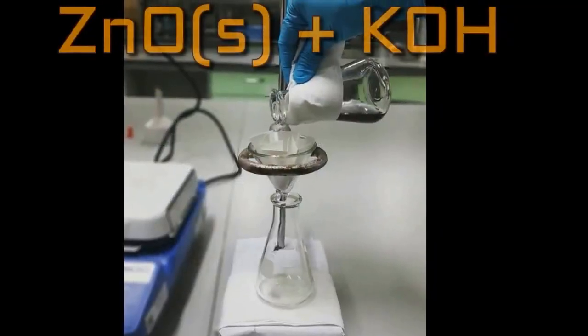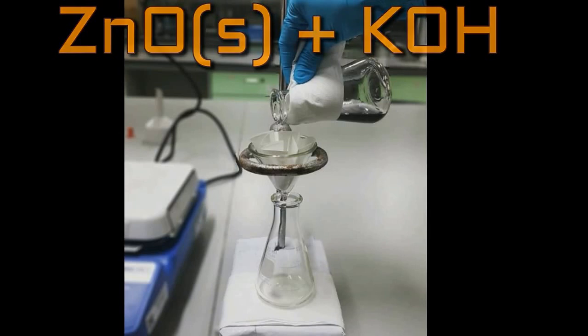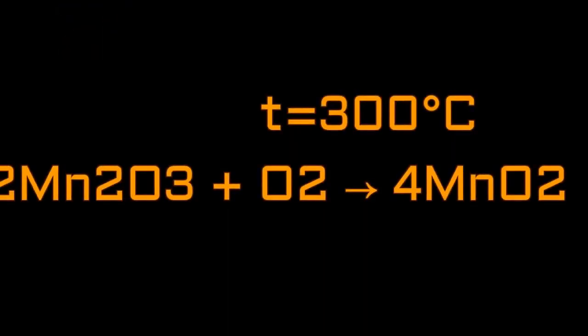I suppose that potassium hydroxide can be dissolved in water and filtered away from zinc oxide. Also, manganese oxide can be heated to produce manganese dioxide.